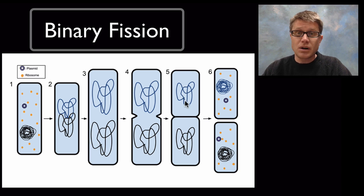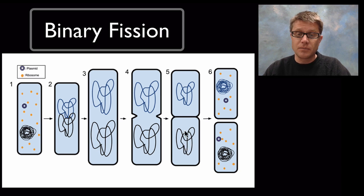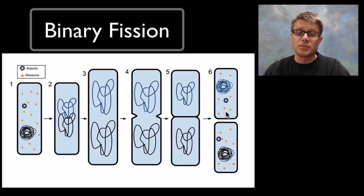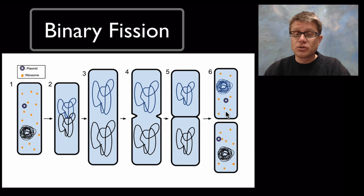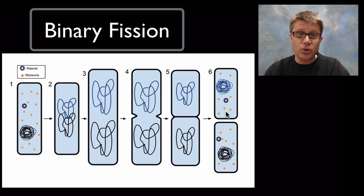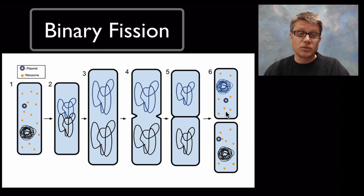How are those two cells different? They're not — they're exactly the same. The DNA in each cell is identical, and when we divide in half we also divide the ribosomes and plasmids. Bacteria don't do mitosis and they don't have sex — they simply reproduce through binary fission. This happens incredibly quickly: a typical E. coli can copy itself and make two cells from one in just 20 minutes.